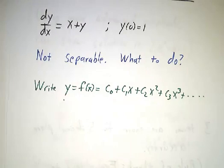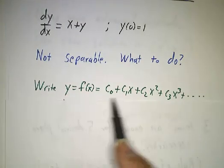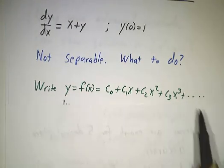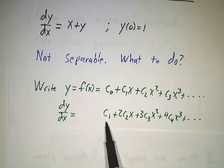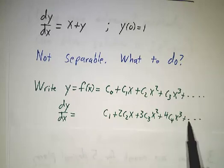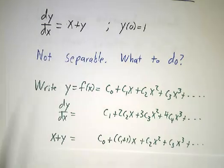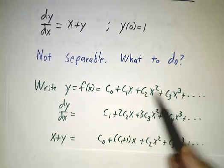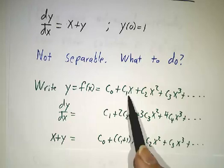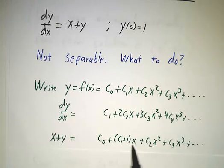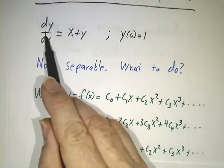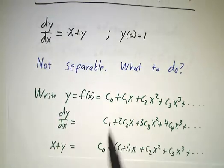So the thing we do is we write y as a power series. And then we take its derivative term by term. And then we just take this equation dy dx equals x plus y, because x plus y is just this whole expression plus x, so it increases the coefficient of x by 1. And we want dy dx to be equal to x plus y, so these two things have to be equal.